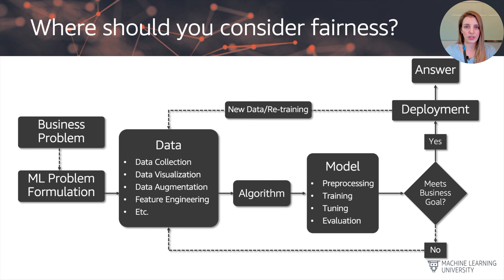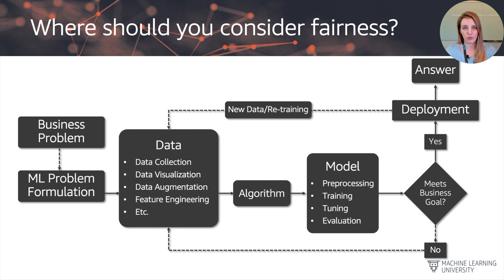Once you have a machine learning problem formulation, you can either go out and collect data or maybe data is already available. There are quite a few things that we can do with that data. Assuming we've cleaned up and prepared the data into the format that we need, we can go ahead and select an algorithm.